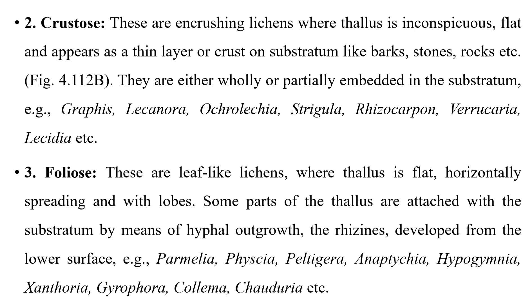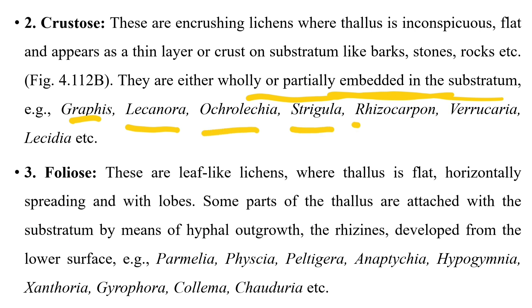Crustose lichens are encrusting lichens where the thallus is inconspicuous — very small, flat, and appearing as a thin layer or crust on the substratum. They are crust-like, generally found on bark, stone, and rocks, and are either wholly or partially embedded in the substratum. Examples include Graphis, Ochrolechia, Strigula, Rhizocarpon, Verrucaria, and Lycidia.